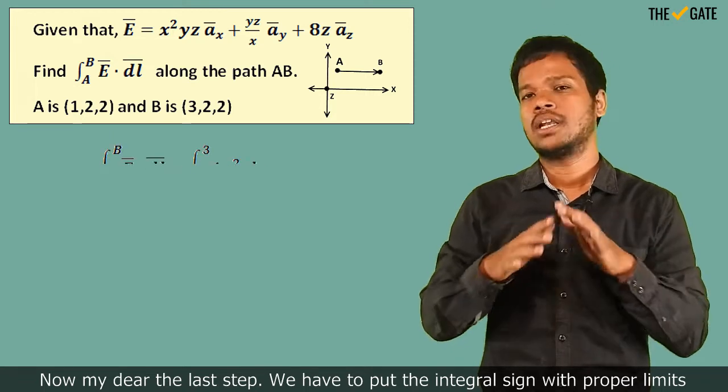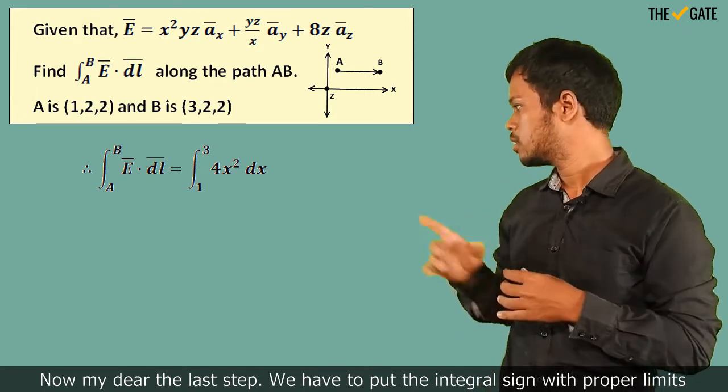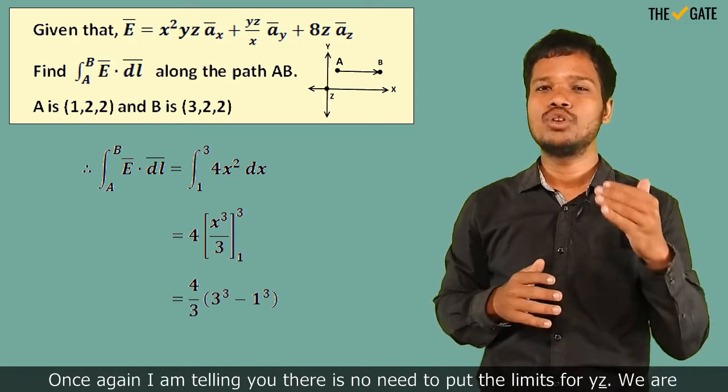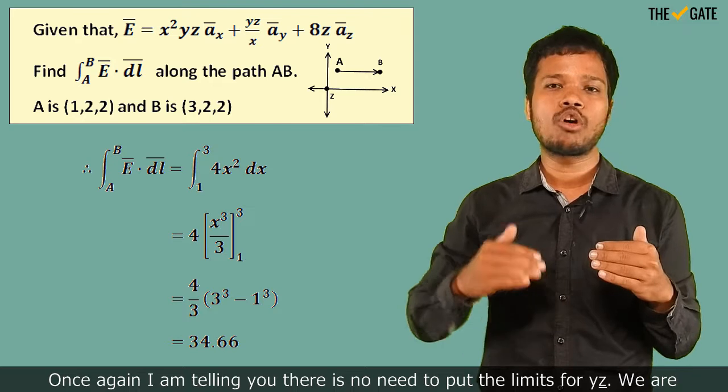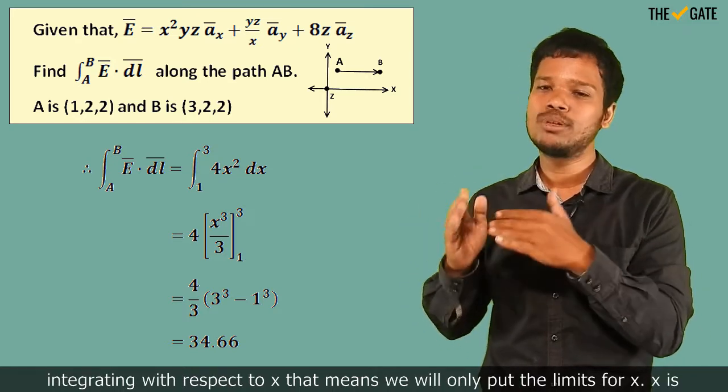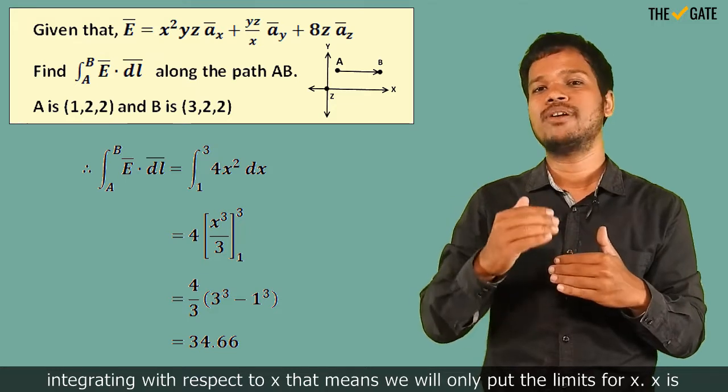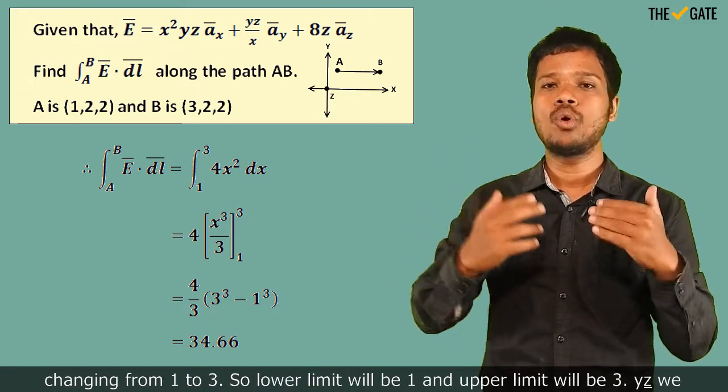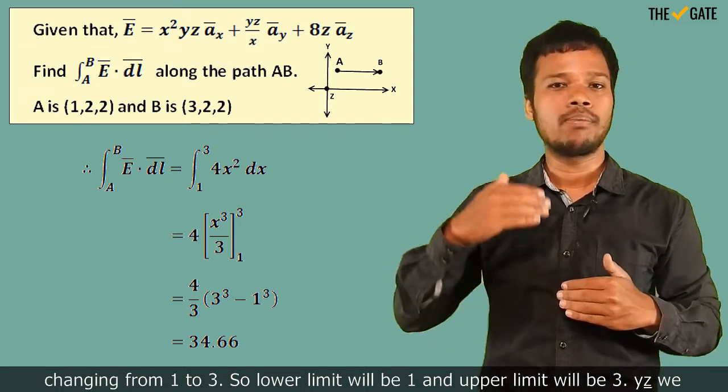Now, the last step: we have to put the integral sign with proper limits. Once again, I am telling you, there is no need to put the limits for y and z. We are integrating with respect to x, that means we will only put the limits for x. x is changing from 1 to 3, so the lower limit will be 1 and upper limit will be 3.